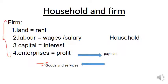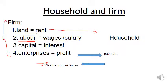First is land. The return on land is rent, which goes to the household. Second is labor. The company will pay a wage or salary for labor, and that payment goes to the household.